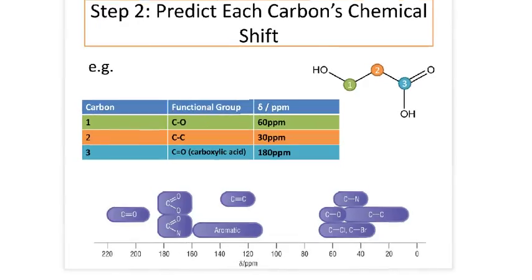So on this slide, we can see that what we predicted is true. For carbon 1, which is identified by the green, we said because it was next to a C-O, it would be in this region, around 60, and in fact it is—it's at 60 parts per million. Number 2, which is the orange, we said was just a C-C, so it's in this region, and indeed in the NMR spectra it's found at 30, which is right in the middle of that range.